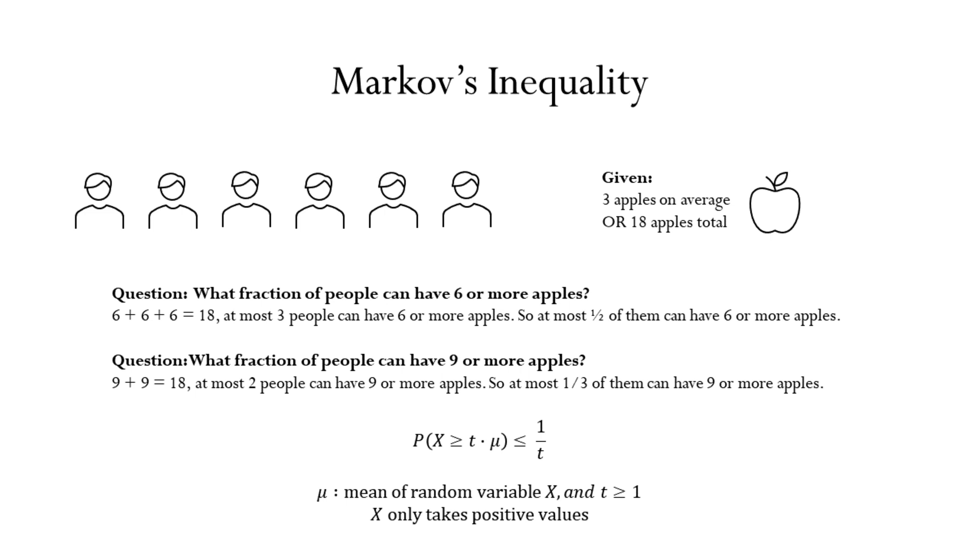If five people had six or more apples, then there would be at least six times five or 30 apples. But we know there are only 18. So it can't also be that five of them have six or more apples. The issue is that there is a limited number of apples and too many people can't have six or more apples.